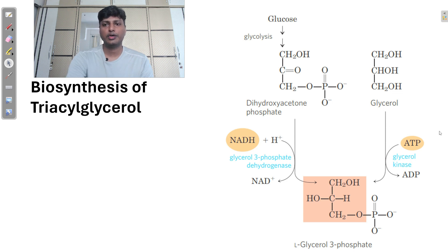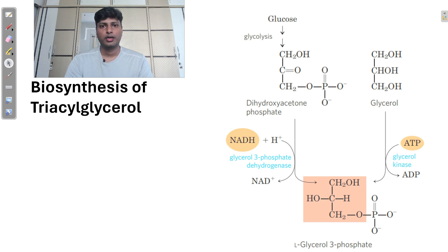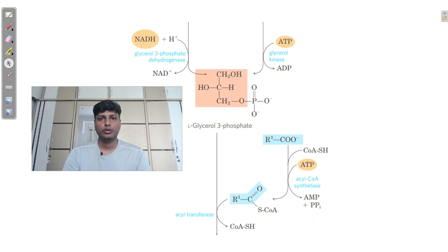This DHAP can be converted into glycerol-3-phosphate by a simple reduction reaction, or directly the cell converts glycerol into glycerol-3-phosphate. So first you need to know that there is formation of glycerol-3-phosphate, and then there will be attachment of a particular fatty acid to glycerol-3-phosphate, resulting in the formation of mono-, di-, or triacylglycerol depending on the number of fatty acids attached.